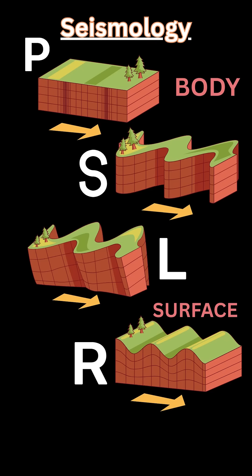The body waves go through the Earth's interior, through different layers and different densities of rock and liquid. The surface waves just go through the surface. The two body waves are the P wave and the S wave, and the two surface waves are the L and the R. They differ in how they propagate and have different characteristics based on their velocities.